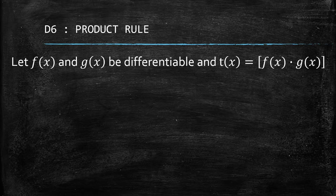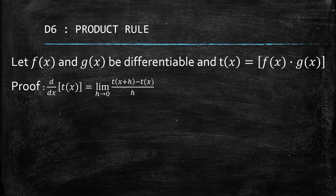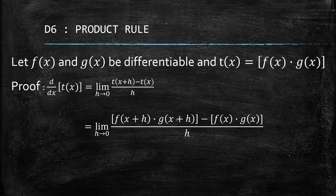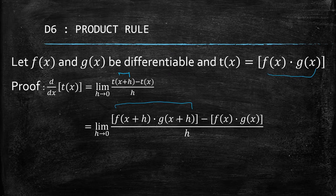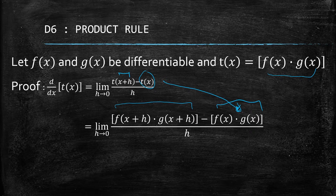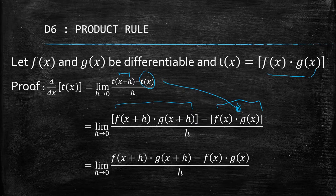We start by letting f(x) and g(x) be differentiable, and we define t(x) as their product f(x)·g(x), similar to what we did for the sum and difference rules. We differentiate t(x) using the limit definition of the derivative: the limit as h approaches 0 of [t(x+h) − t(x)] / h. We substitute x+h as the input for both f and g, and t(x) = f(x)·g(x).